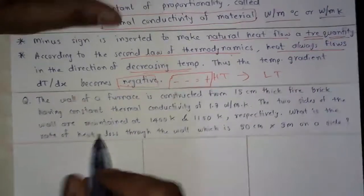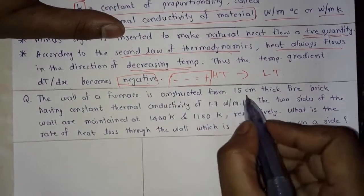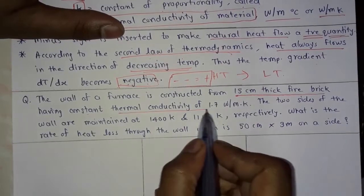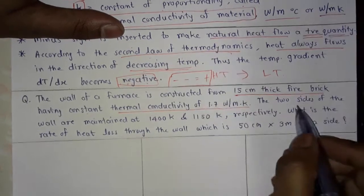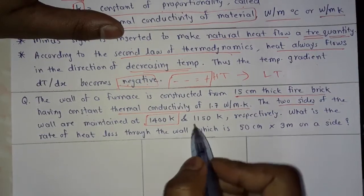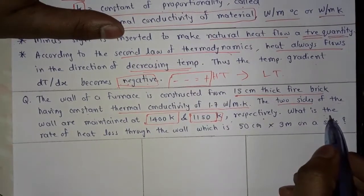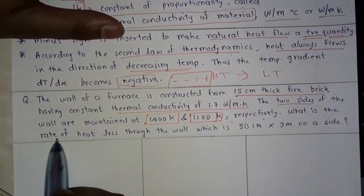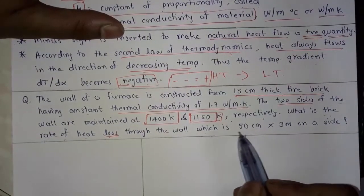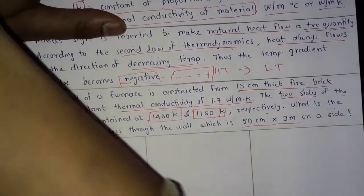Now let's see the example. The wall of a furnace is constructed from 15-centimeter-thick fire brick having constant thermal conductivity 1.7 watts per meter Kelvin. Two sides of the wall are maintained at 1400 Kelvin and 1150 Kelvin respectively. What is the rate of heat loss through the wall, which is 50 centimeters by 3 meters on a side?